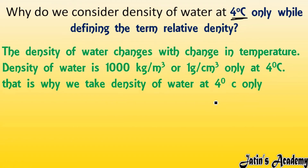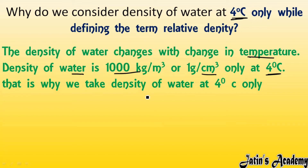The answer is that the density of water changes with temperature. When temperature changes, the particle arrangement changes, meaning mass per unit volume changes, so density changes. However, the density of water is exactly 1000 kg/m³ or 1 g/cm³ only at 4 degrees Celsius. That is why we take the density of water at 4 degrees Celsius as the standard reference.